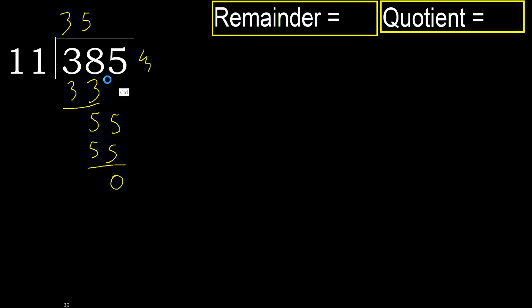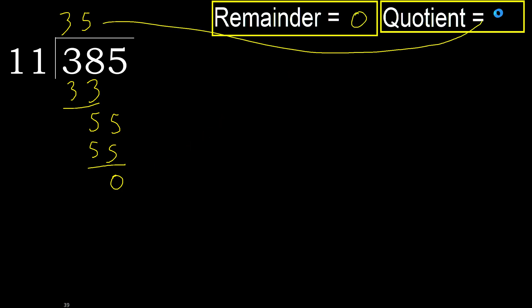There is no number remaining, therefore finish it. 385 divided by 11 is 35.